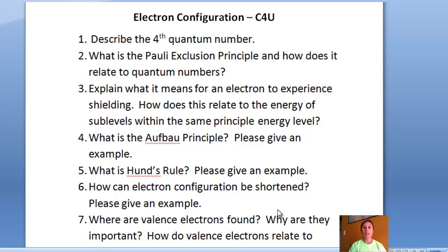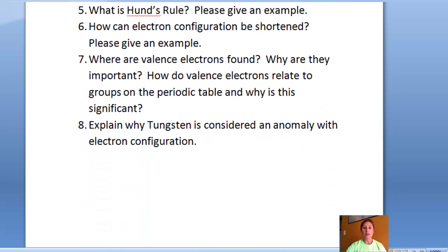Number 5, what is Hund's rule, and also please give an example of that. Number 6, how can electron configuration be shortened, and again, please give an example. Number 7, where are valence electrons found? Why are they important? How do valence electrons relate to groups on the periodic table, and why is this significant?